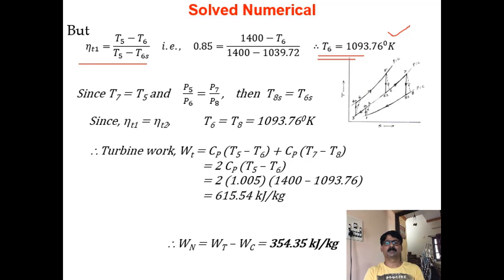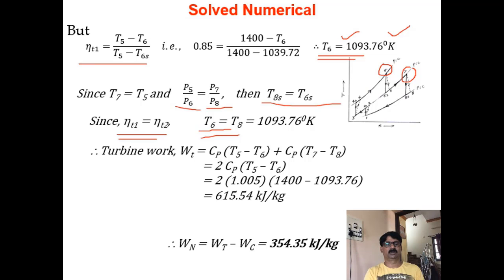With perfect reheating, T7 equals T5. Since expansion pressure ratios are equal and turbine efficiencies are equal, T8s equals T6s and T8 equals T6. Turbine work WT = Cp(T5 - T6) + Cp(T7 - T8) = 2Cp(T5 - T6) = 615.54 kJ/kg. Net work output = WT - WC = 615.54 - 261.19 = 354.35 kJ/kg.